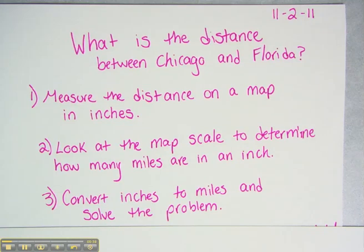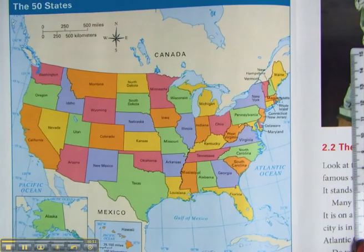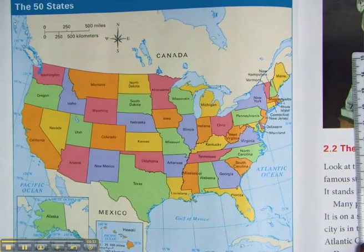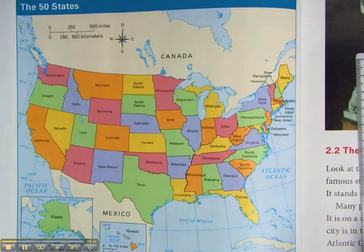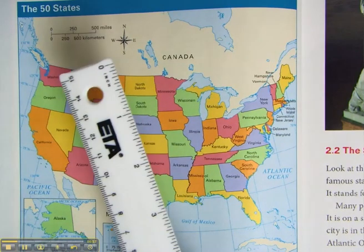For this you're going to need a ruler and a map. I'm going to need a map of the United States because Chicago and Florida are both found in the United States. Here are my materials. So here's my map of the United States and here's my ruler.